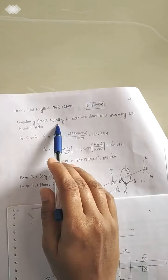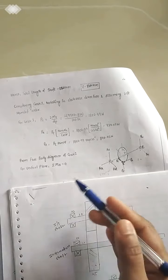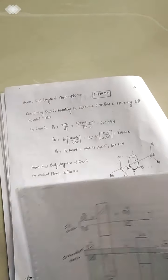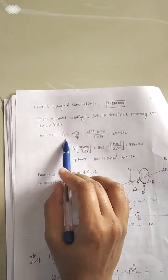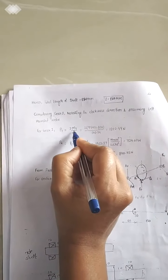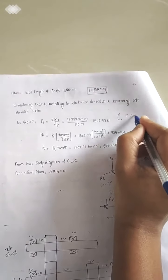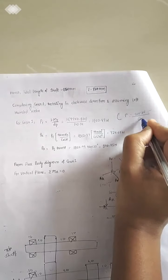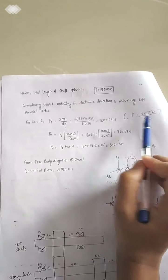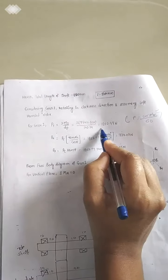Now, considering gear one — the helical gear — which is left-hand and rotates in the clockwise direction. To find the tangential force, we use the formula Pt = 2Mt / dp. The torque Mt is calculated from power using Mt = (Power × 60) / (2π × N). With the power given in the problem statement, we can calculate Mt and then determine the tangential force Pt.